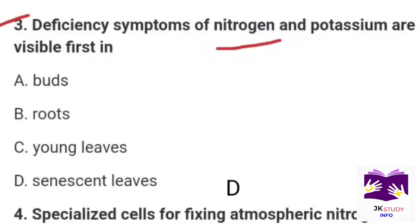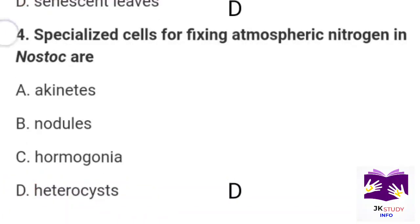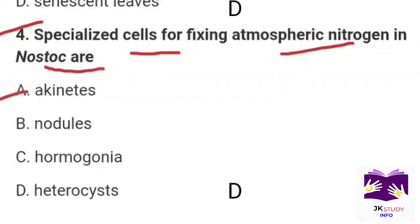Next question: Deficiency symptoms of nitrogen and potassium are visible first in? Option A: buds. Option B: roots. Option C: young leaves. Option D: senescent leaves. Correct option: specialized cells for fixing atmospheric nitrogen in Anabaena are?